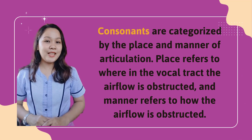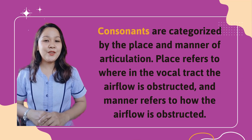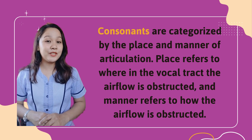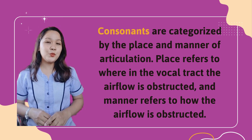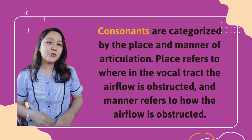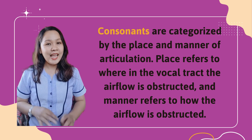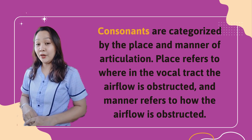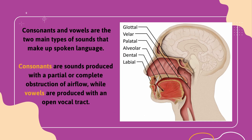Now, let's break it down further. Consonants are categorized by the place and manner of articulation. Place refers to where in the vocal tract the airflow is obstructed, and manner refers to how the airflow is obstructed. Consonants are sounds produced with a partial or complete obstruction of airflow, while vowels are produced with an open vocal tract.